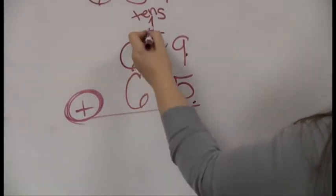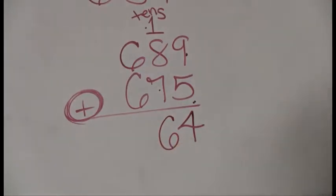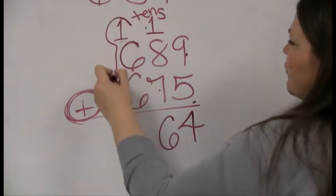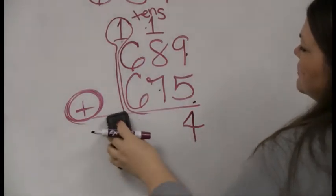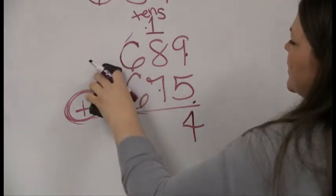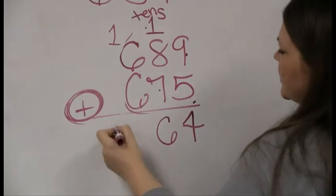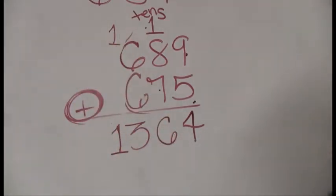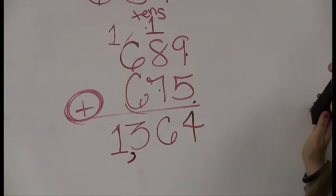And now we'll add this column with this 1 added. So 8 plus 7 is 15, plus 1 is 16. Again, I'll drop my 6 down and my 1 up. Some of my students, especially my dyslexic students, mix up which number goes where. So you'll notice, even though 1's on the top and 1's on the bottom, it's still in the order to write 16. 1, 6. So left to right. So 16, 6 down, 1 up. And we'll try again. 6 plus 6 is 12, plus 1 is 13. Now this time I broke my own rule and dropped the 1 down because there was no more columns to carry it into. So there you go. 689 plus 675 is 1,364.